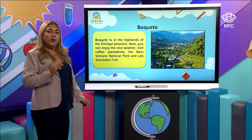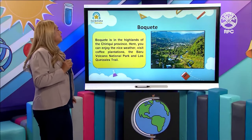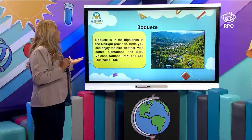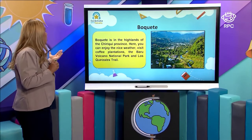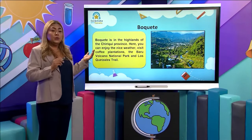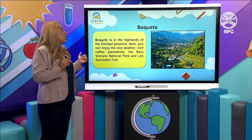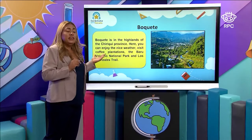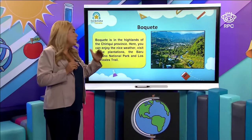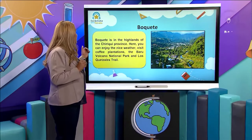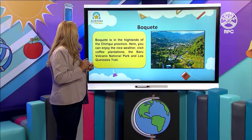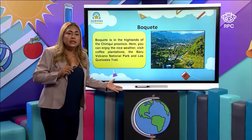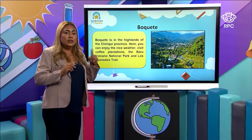What about Boquete? Do you know where Boquete is? This is in the province of Chiriqui. Boquete is the highland of Chiriqui province. Here you can enjoy the nice weather and visit coffee plantations. You can also visit the Baru volcano — this is our national volcano. We also have a national park and Los Quetzales trails. So you have a lot of outdoor activities that you can do in Boquete.